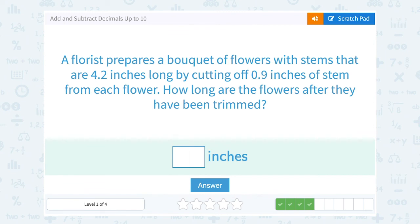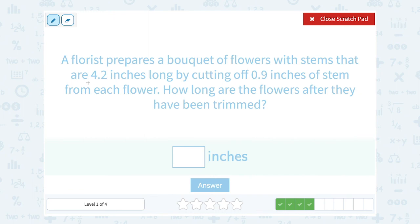A florist prepares a bouquet of flowers with stems that are 4.2 inches long by cutting off 0.9 inches of stem from each flower. How long are the flowers after they have been trimmed? Well if they started out as 4.2 inches long, and we're cutting off 0.9, we're making them shorter when we trim them. So we're reducing them or subtracting 0.9 inches when we cut the bottom off.